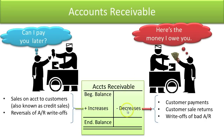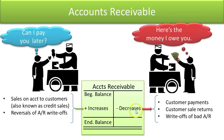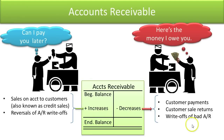When customers pay, your receivables go down — you get the cash, and since you now have the cash, you no longer have the receivable. If a customer returns goods, you give them a reduction in the receivable. Sometimes customers simply don't pay, and when you've concluded they've gone bankrupt and will not pay, you write off those bad accounts receivable. That causes the asset to go down because there is no future benefit — they're not paying.